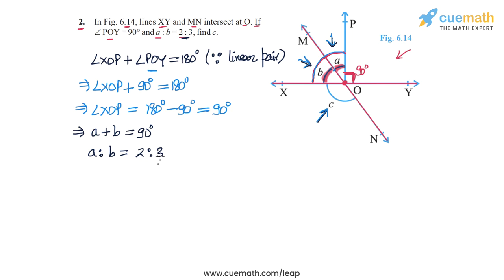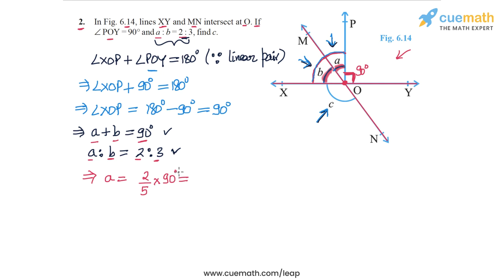This is given to us as a fact. So from the fact that A plus B is 90 degrees and that A to B is 2 to 3, we can easily find A and B separately. Because A to B is 2 to 3 and the sum of A and B is 90 degrees, A must be 2 over (2 plus 3), or 2/5 of 90 degrees. So A is 2/5 into 90. 90 divided by 5 is 18, and 18 into 2 is 36. So A is 36 degrees. Then B is 90 minus 36, which is 54 degrees.